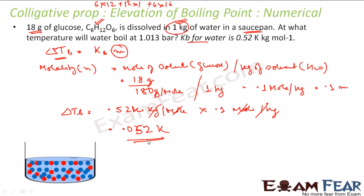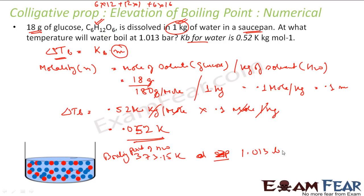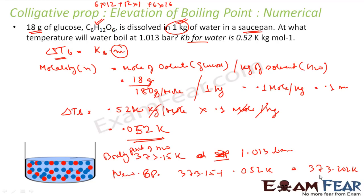We know water boils at 100°C or 373.15 K at 1 ATM pressure (1.013 bar). The elevation is 0.052 K, so the new boiling point is 373.15 + 0.052 = 373.202 K. So if you add 18 g of glucose to water, the water will now boil at 373.202 K, not at 373.15 K.